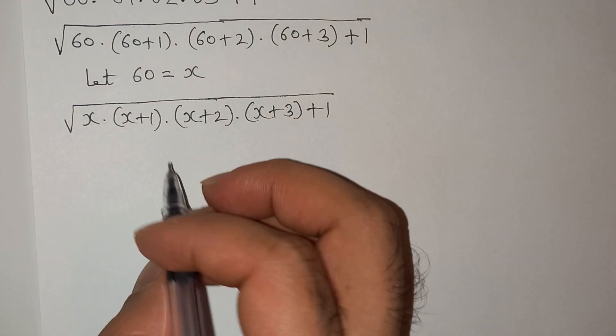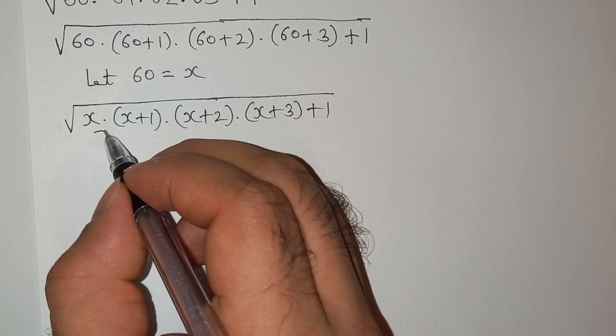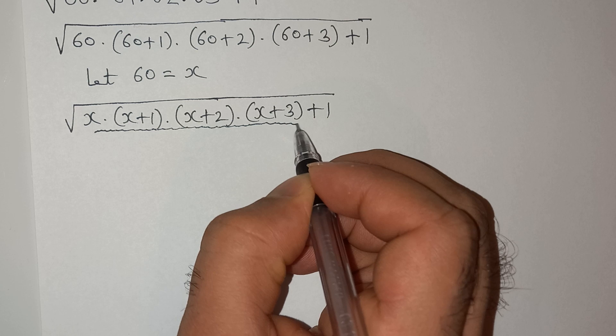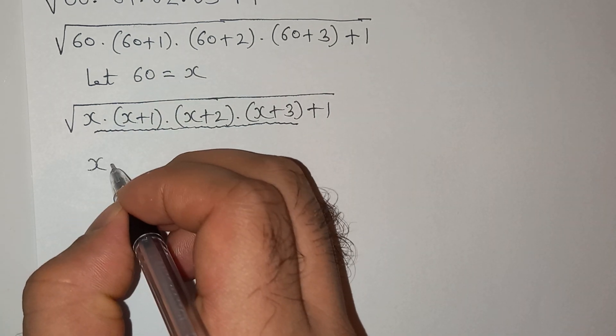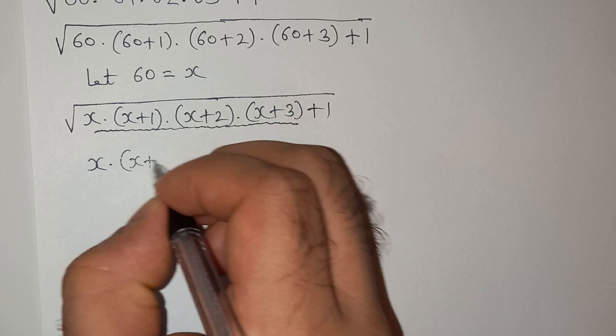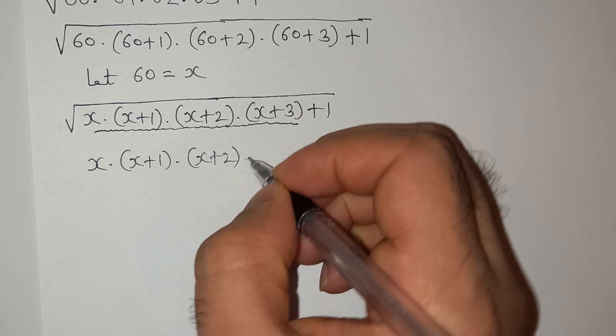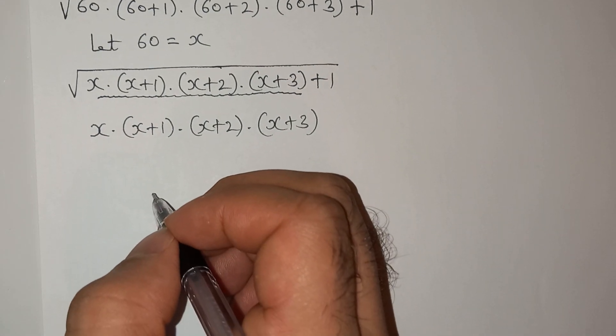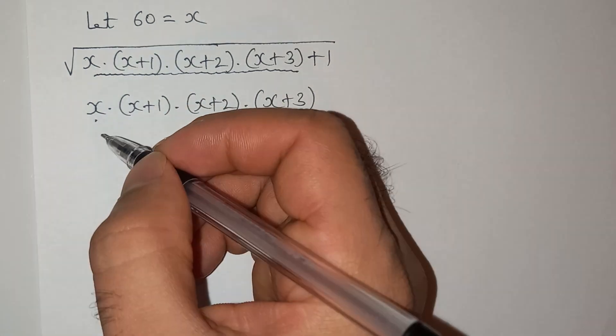For easy calculation, I'm going to first take this term outside and solve it separately. So this is x times (x+1) multiplied by (x+2) multiplied by (x+3).